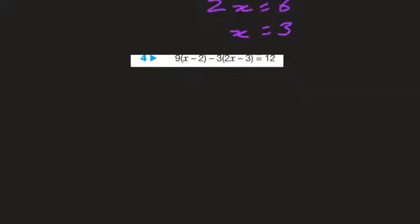Multiplying in by 9: 9 times x is 9x, minus 18, minus 6x, and minus 3 times minus 3 is plus 9, and that's equal to 12.